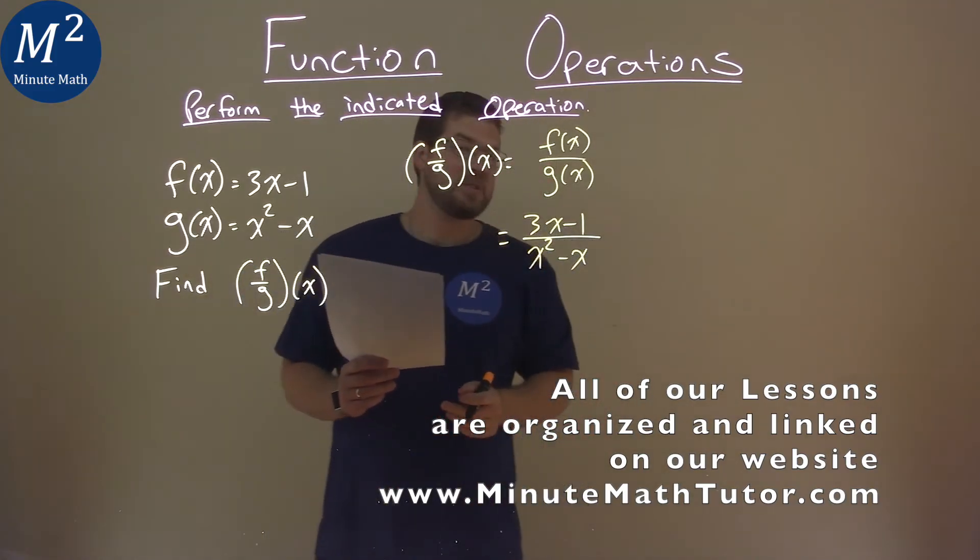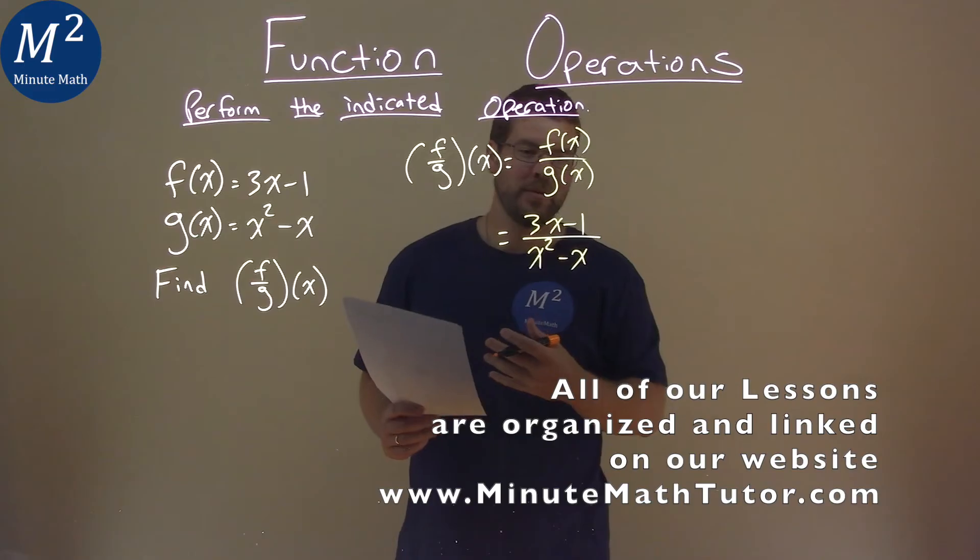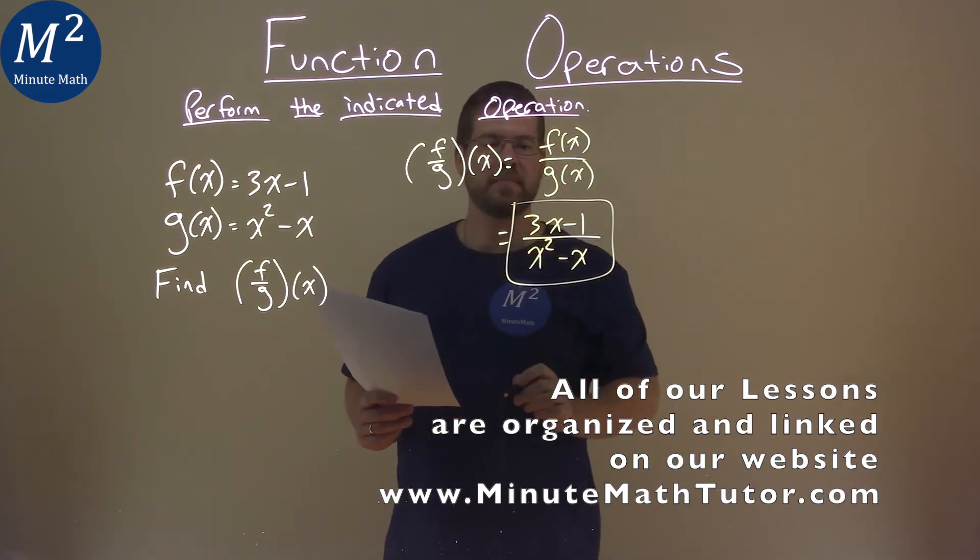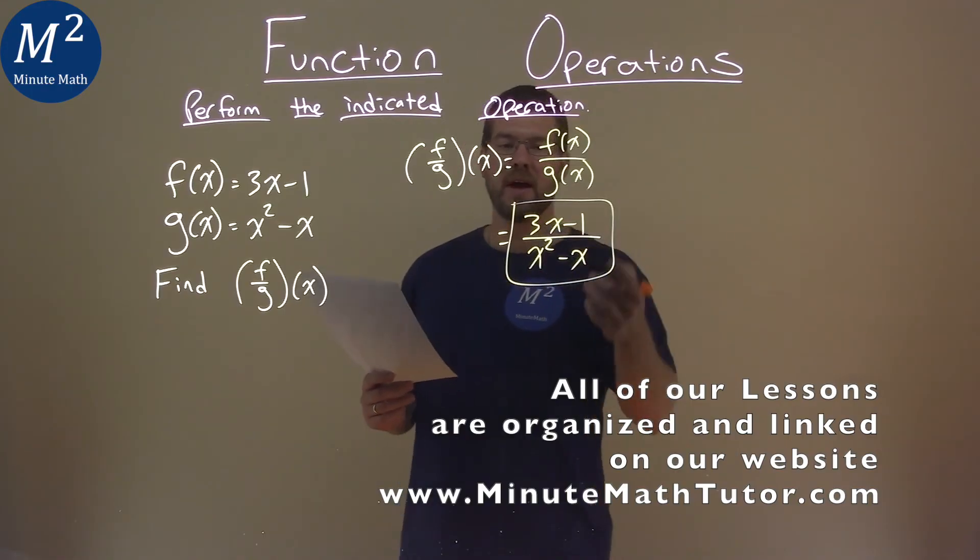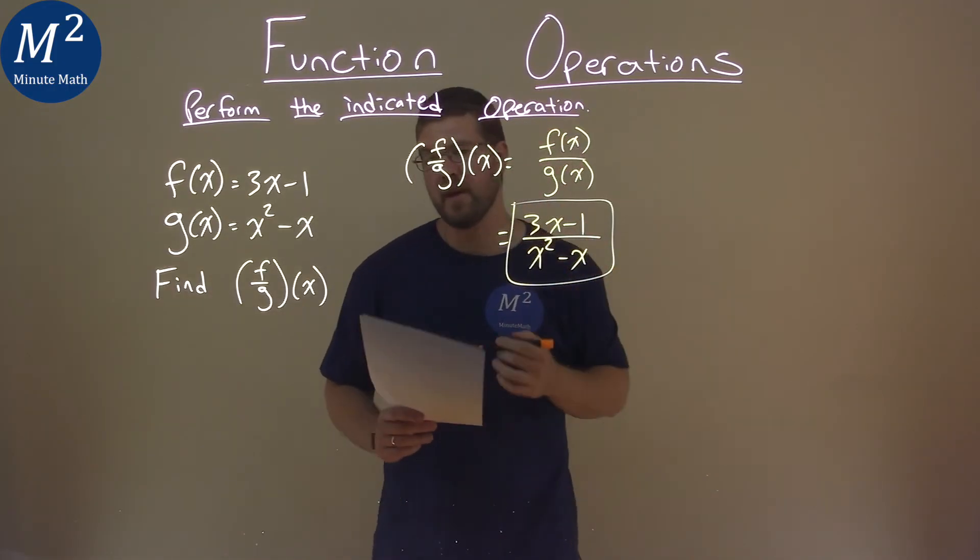And that's actually it. We can't simplify this anymore, so this is actually a pretty quick one here. And so, our final answer is just 3x minus 1 over x squared minus x.